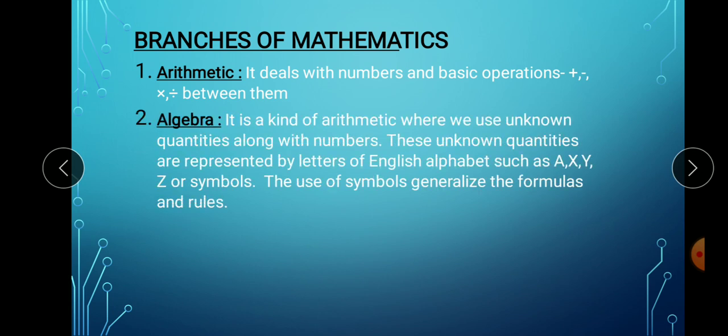Second branch is algebra. It is a kind of arithmetic where we use unknown quantities along with numbers. These unknown quantities are represented by letters of the English alphabet such as x, y, a, b, etc. or symbols. The use of letters helps us to generalize the formulas and rules that we write and also helps us to find the unknown missing values in algebraic expressions and equations.